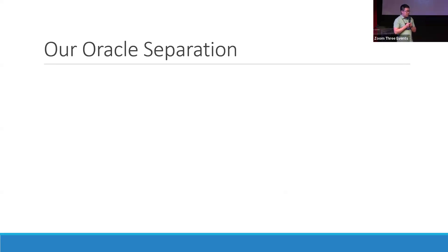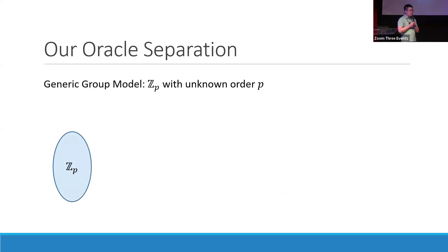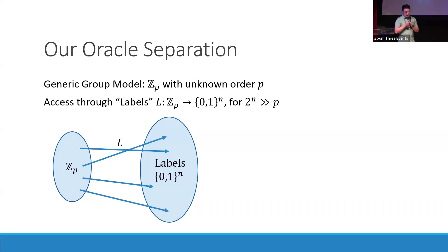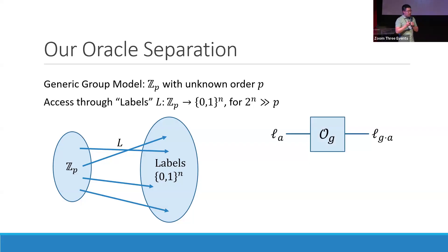We will be working in the generic group model for a group of large prime order P, specifically Shoup's generic model, working with labels. We access the group elements through a set of labels of n bits long. You can think of there being a mapping between group elements and the set of labels. The size of the label set is much larger than the total number of group elements, so the valid labels are actually very sparse — if you draw a random label, it's very likely not going to be a valid one.